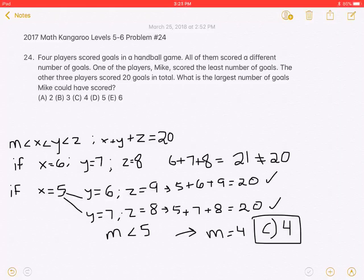We know that 6 times 3 is 18. If X is equal to 6, Y and Z must be at least 7 and 8, respectively.